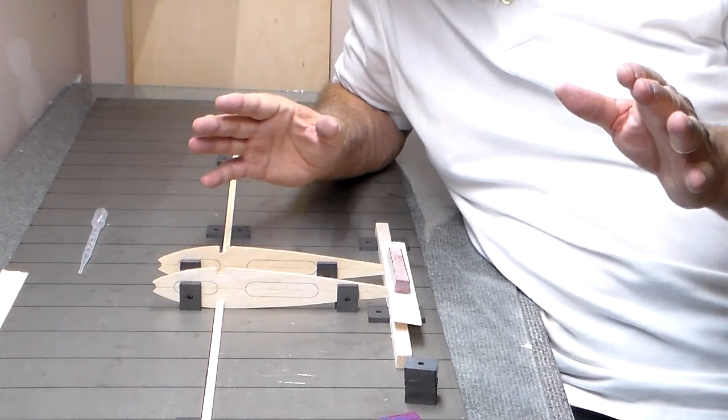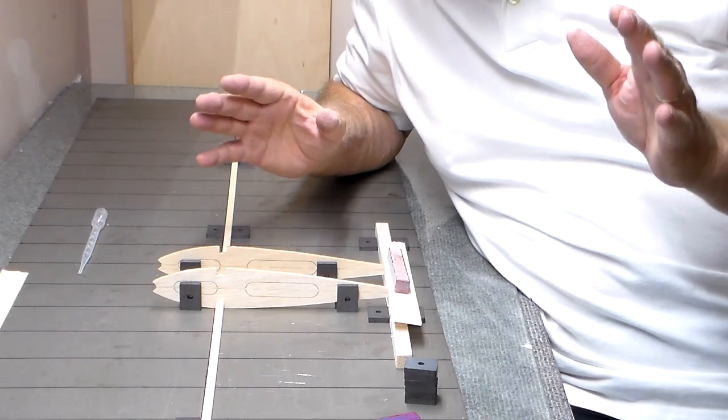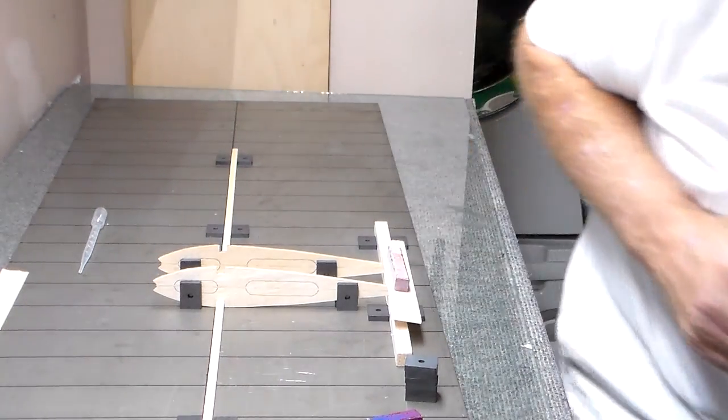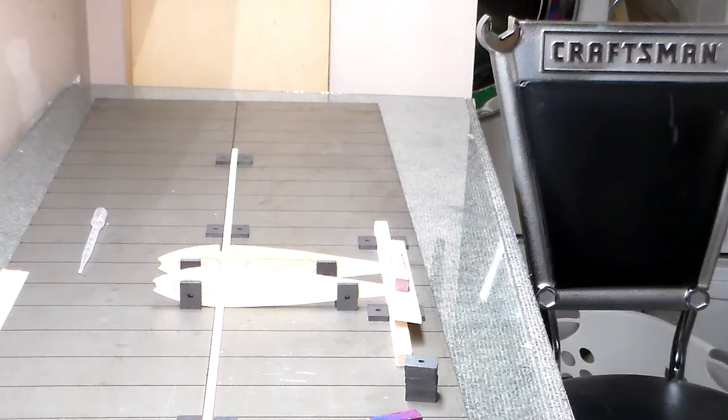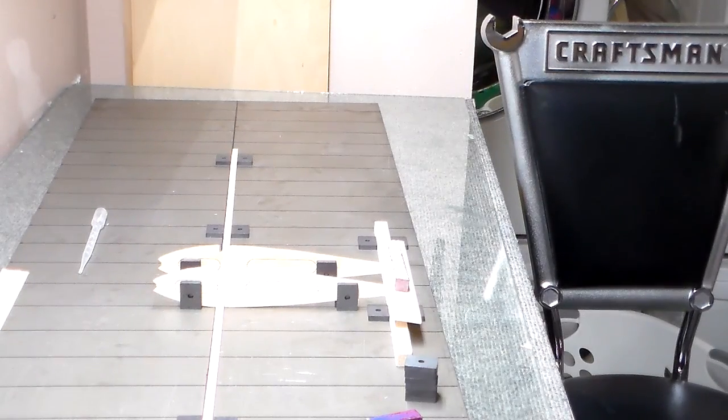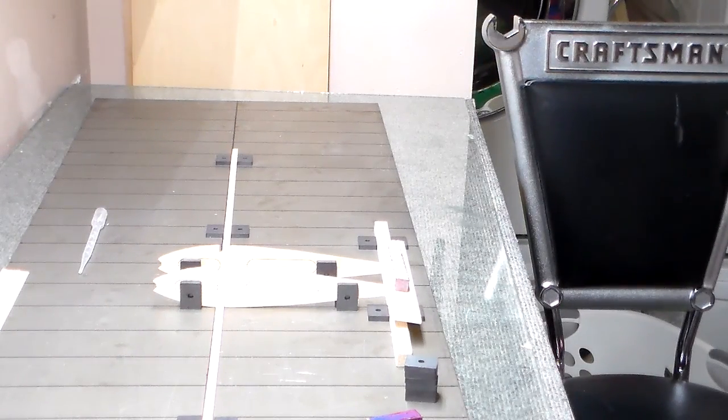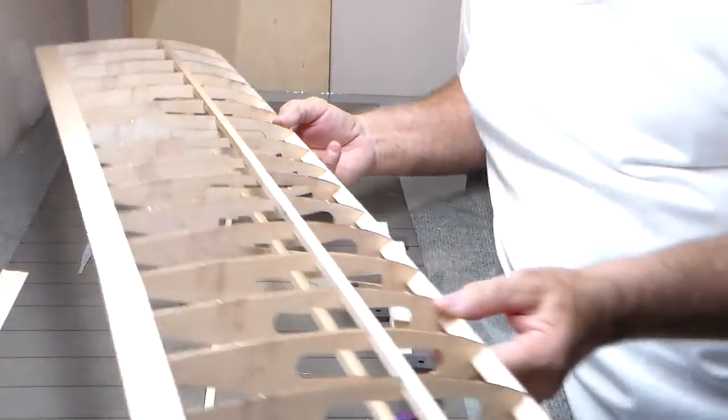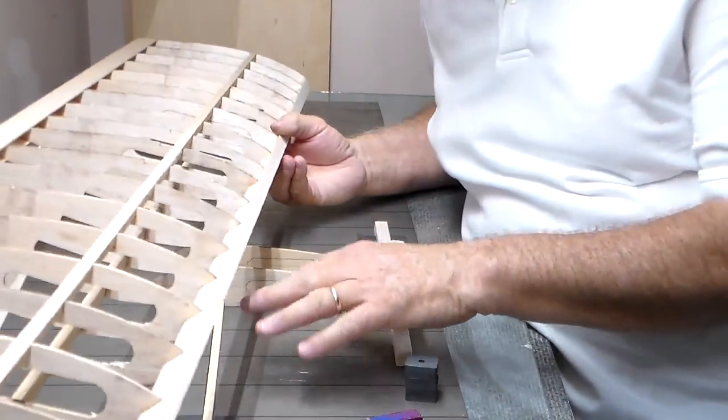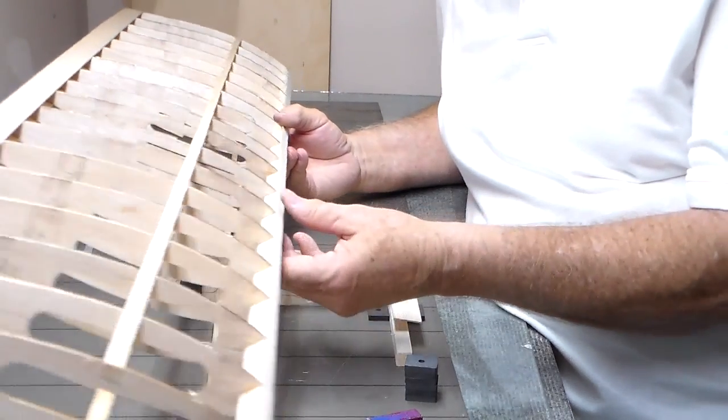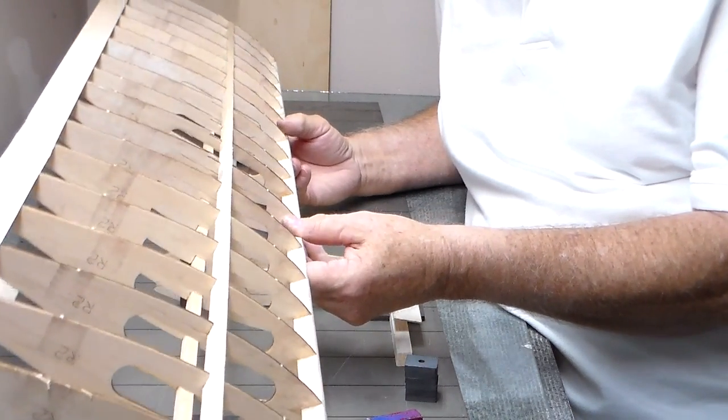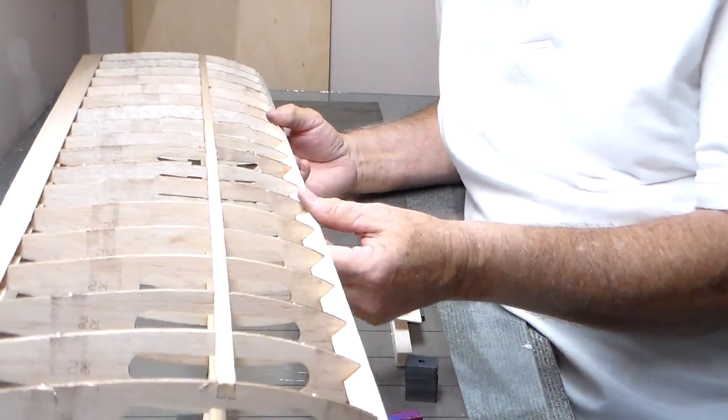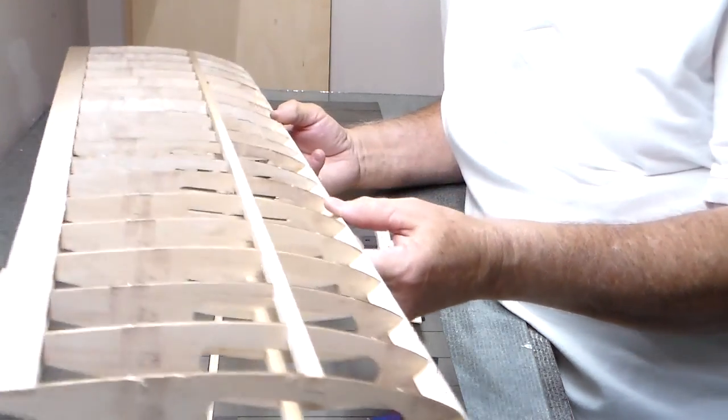But before I go getting ahead of myself, let me show you the Banshee wing. Here's the Banshee wing that I just built on this. It's the first wing I've ever built on the magnetic building system and it is true, it is straight, it was easy to build.